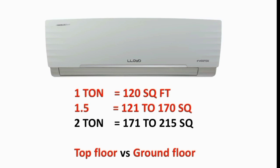The second factor is if your room is around 100 square feet but is on the third floor or top floor. In that case, you should consider using a 1-ton AC for the top floor, as the heat load is higher on upper floors.